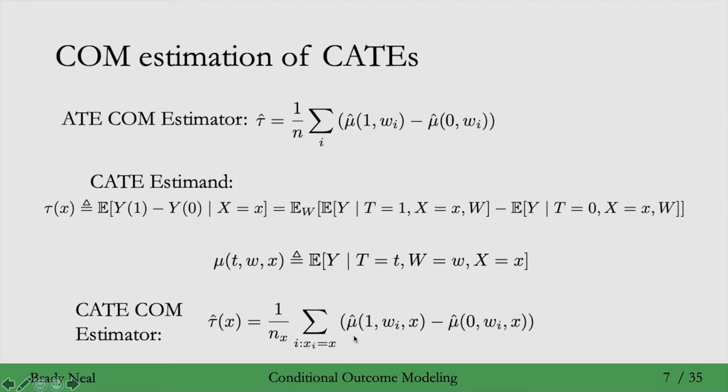So now when we train the statistical model, it also needs to take as input x. So the model that we train, we'll train to predict y from treatment w and x. And additionally, this sum over i is only going to be for the samples where x i equals this x here that defines the conditional average treatment effect, the specific kind of conditional average treatment effect that we're looking at.